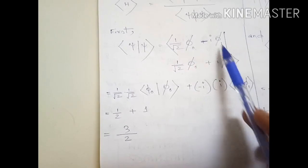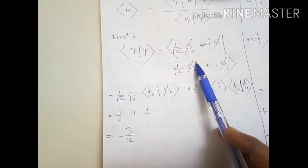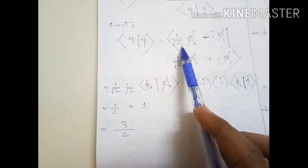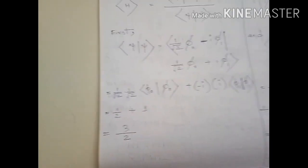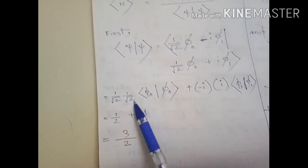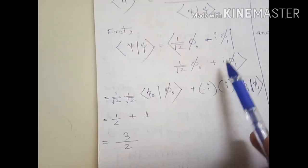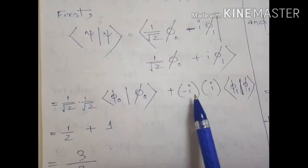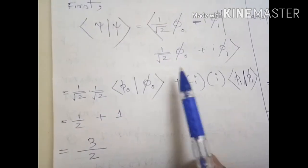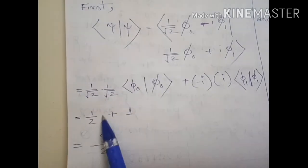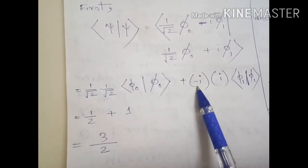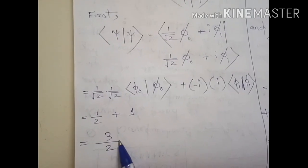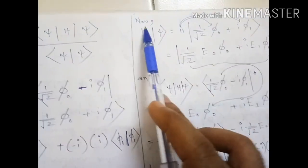Cross-multiplying gives ⟨φ₀|φ₁⟩ = 0. The surviving terms are (1/√2)(1/√2) = 1/2 times ⟨φ₀|φ₀⟩ = 1, and (1/√2)(1/√2) = 1/2 times (-iφ₁)(iφ₁) = -i·i·⟨φ₁|φ₁⟩. Since -i × i = -i² = +1, both terms give 1/2 each, so ⟨ψ|ψ⟩ = 1/2 + 1/2... ultimately giving us 3/2.